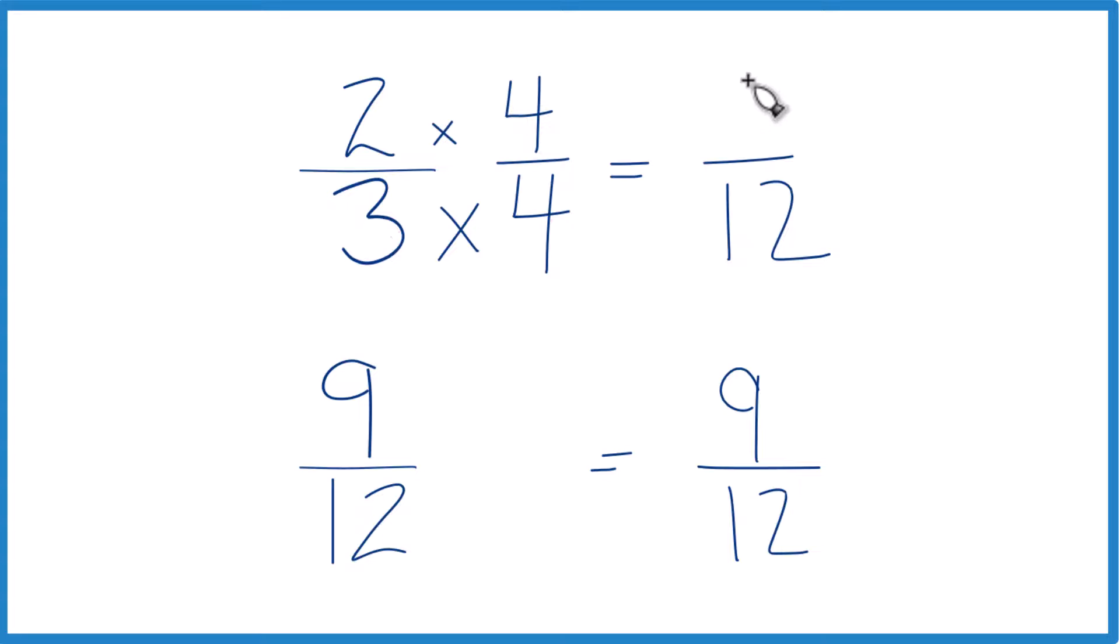Two times four is eight, and eight-twelfths, that's an equivalent fraction to two-thirds, same value. But now we have the same denominators here, we're just going to compare the numerators. And nine is greater than eight, so nine-twelfths, that's greater than eight-twelfths. These are the same thing, so nine-twelfths is also greater than two-thirds.